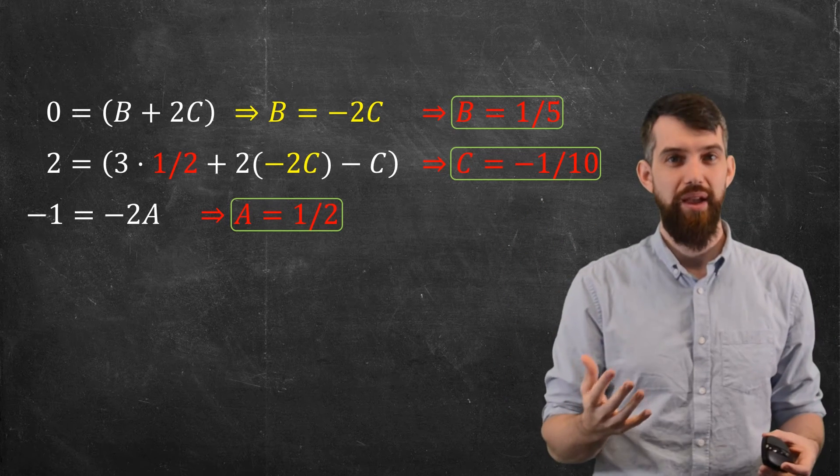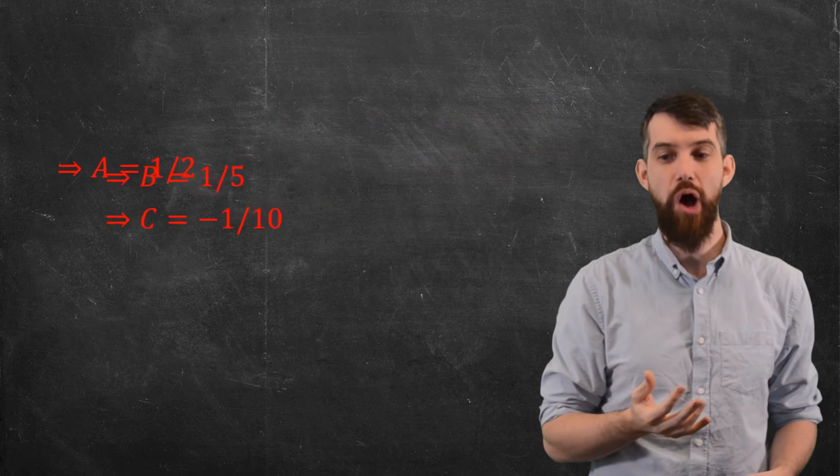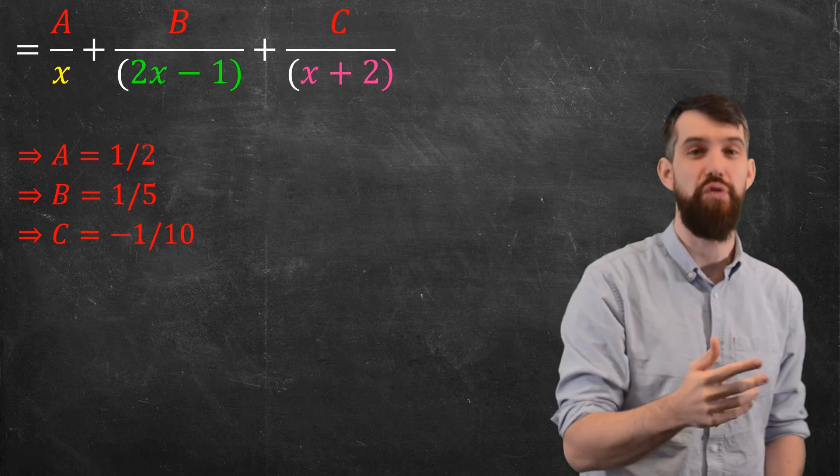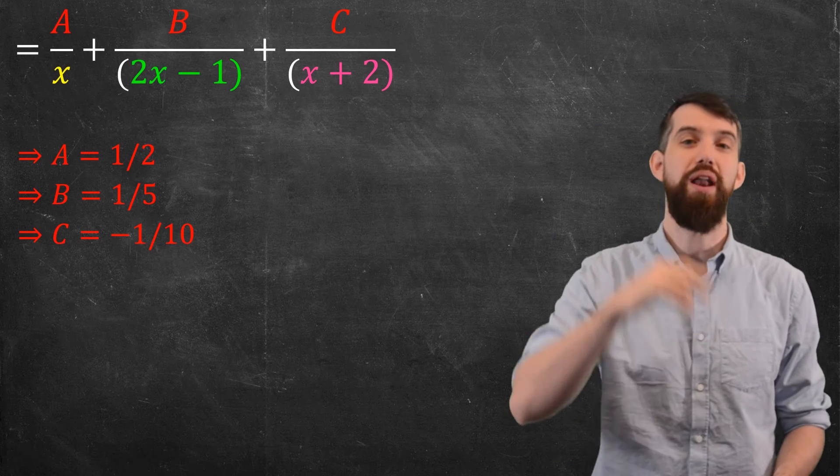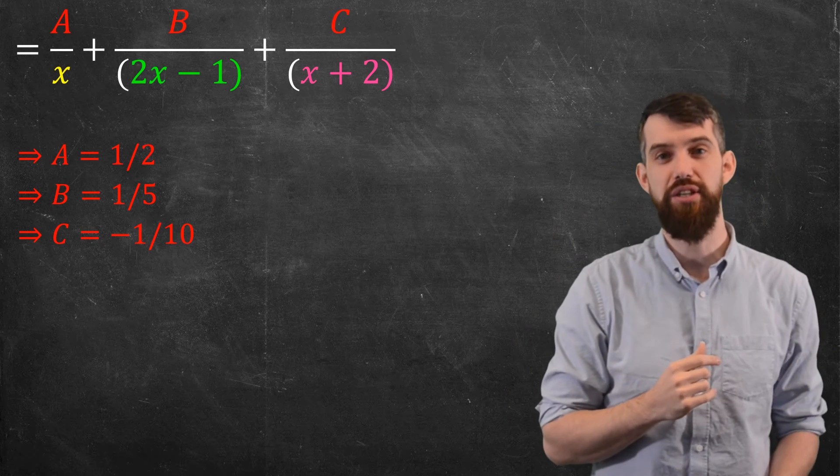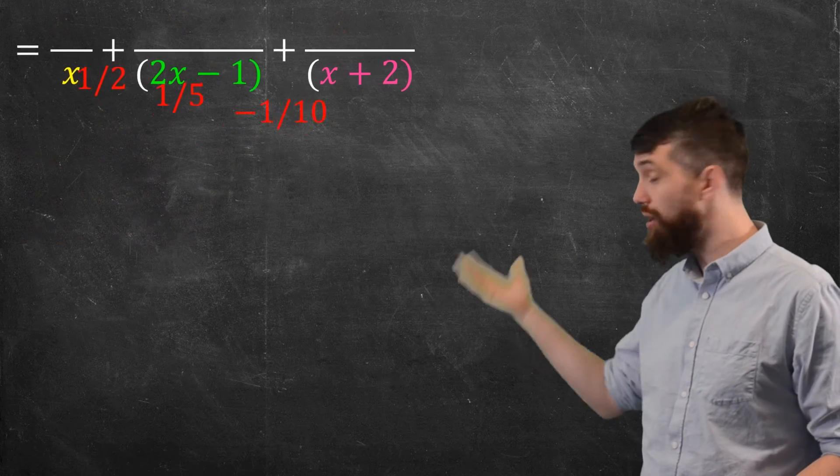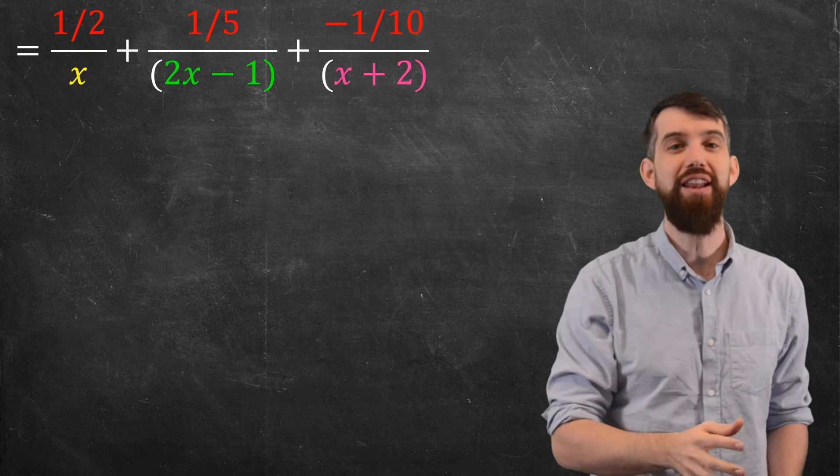All right, where are we? We solved the abc's. And I'll remind you that the abc's were the abc's in this form, a over x, b over 2x minus 1, and c over x plus 2. I was trying to figure out what the abc's are. I now know what they are, so I can go and plug them in. And finally, I am trying to integrate something.